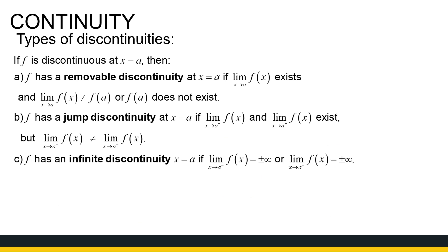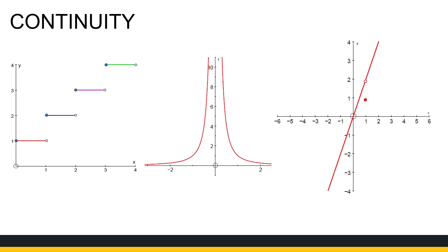The last topic in this video is types of discontinuity. If a function is not continuous, the question is what is wrong with it. There are three main types. The first is a removable discontinuity, where the limit exists but is not equal to the function value, or the function value doesn't exist. For example, as x approaches 1 in this third graph, the limit exists and equals 2, but the function value at 1 is 1 — they're not equal, so it's a removable discontinuity.